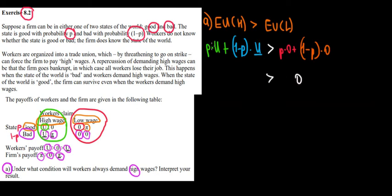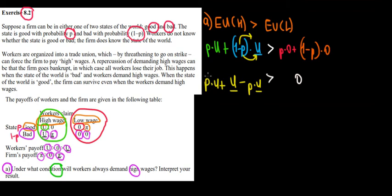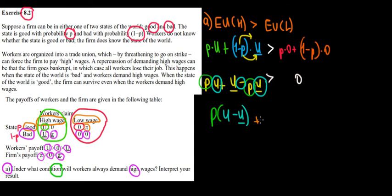Opening the brackets on the high-wage side, we get P times U plus U-bar minus P times U-bar. We want to find under what condition they demand a high wage — meaning the expected utility of high wages exceeds zero. So we need P times U plus U-bar minus P times U-bar to be greater than 0. Taking P as a common factor from the first and third terms, we get P times (U minus U-bar) plus U-bar greater than 0.